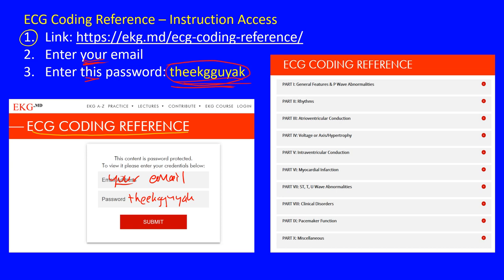Once confirmed, every time you return to the site enter your email and that same password for free access — you only need to confirm your email the first time. The reference is continually updated. Atrial flutter is listed under the Rhythms section. You'll also find general features, P-wave abnormalities, normal EKG, artifact, and left and right atrial abnormalities in that section.